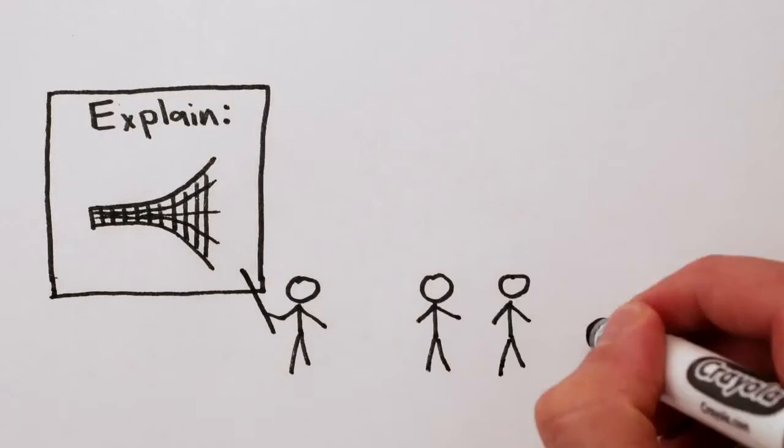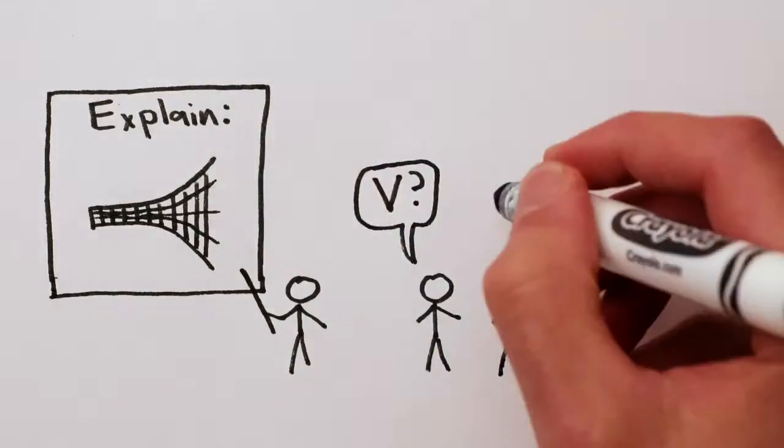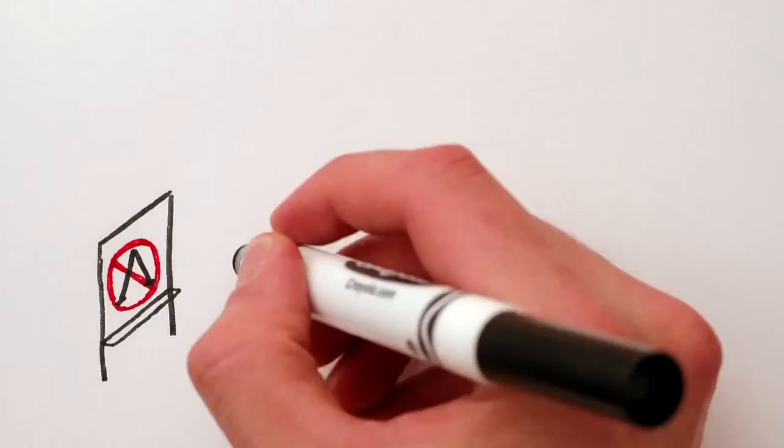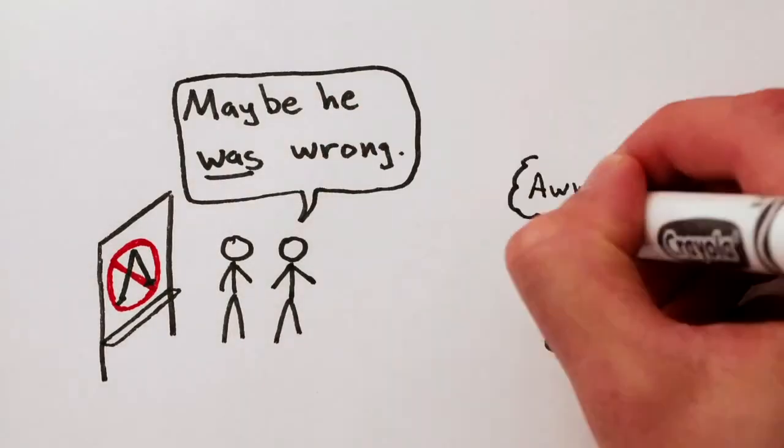So theoretical cosmologists are trying to understand what could be going on. Is it really vacuum energy? Is it some variation of that? Or is it even a modification of Einstein's general relativity, our theory of gravity?